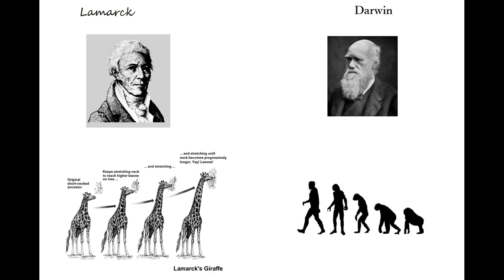In 1809, the French biologist Jean-Baptiste Lamarck published his theory in a book called Philosophie Zoologique, or Philosophical Zoology, that would later become known as Lamarckism.